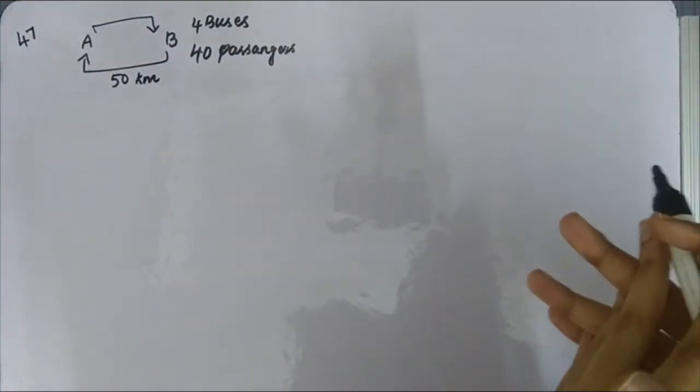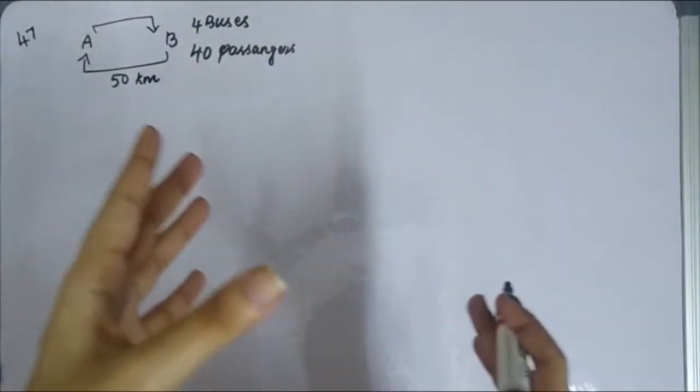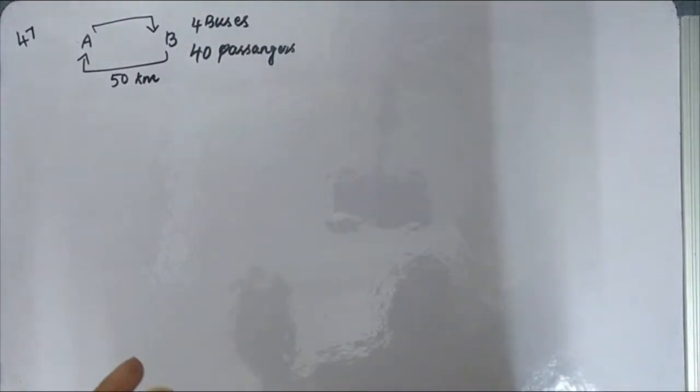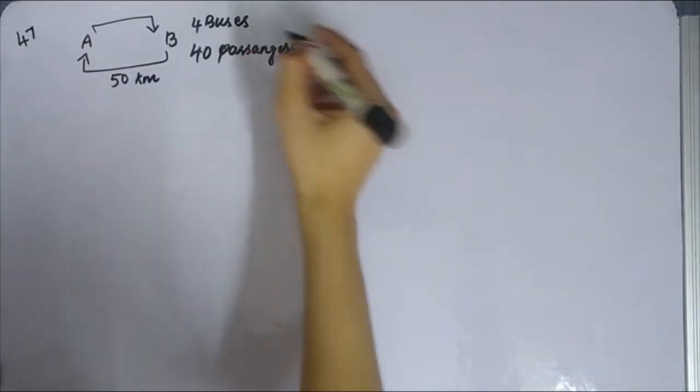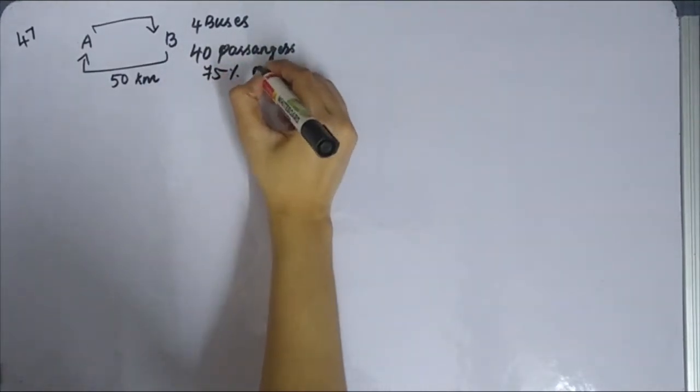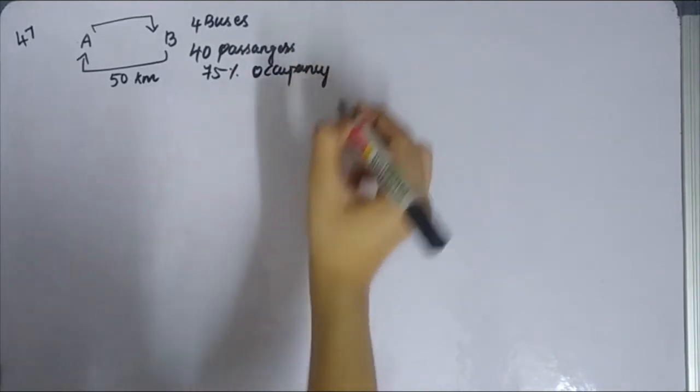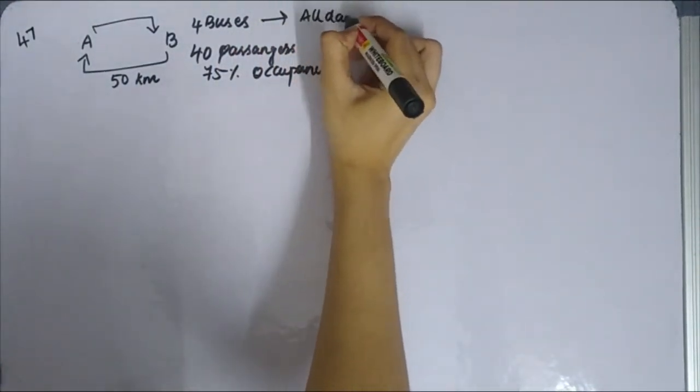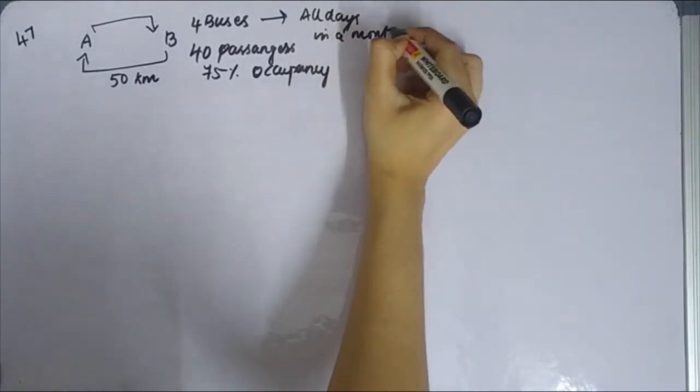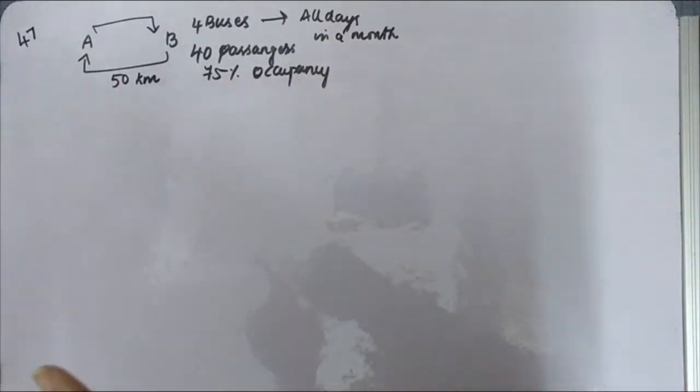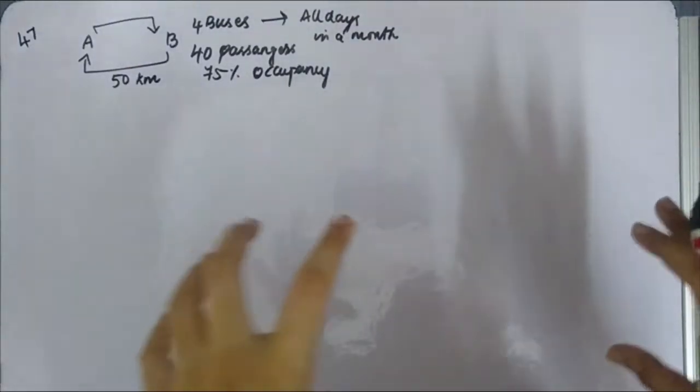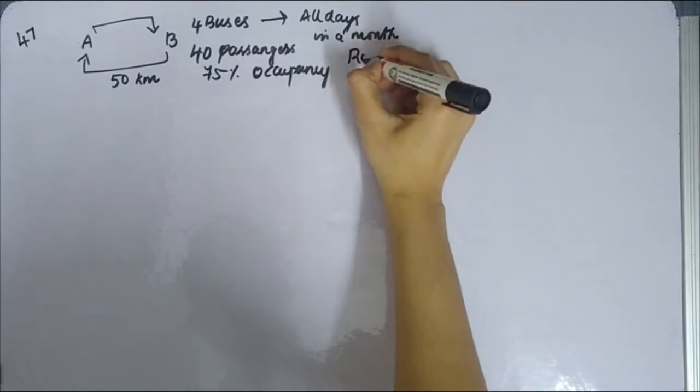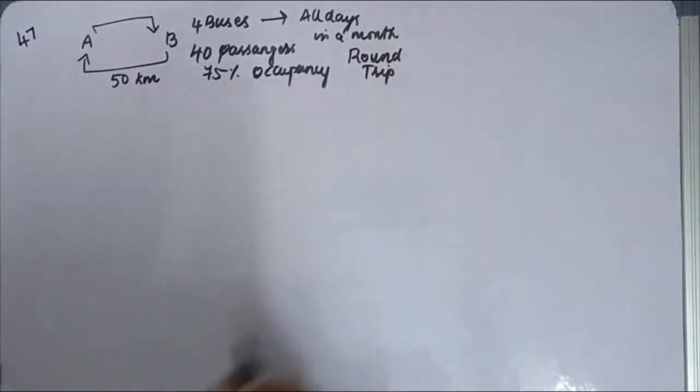Okay, next is cost has been given in this question. So what cost and how do we find out? Additional details is actually 40 passengers, that is total capacity. But if you look at the bus, 75% of occupancy and usage will be there. So the bus is all day, one month, every day, all day it has been operated.